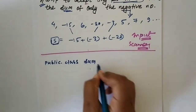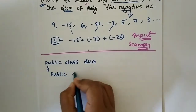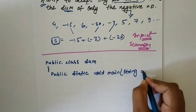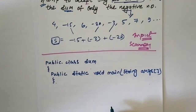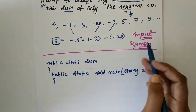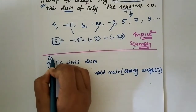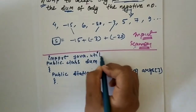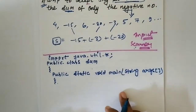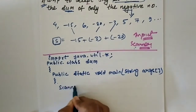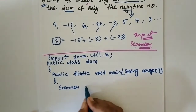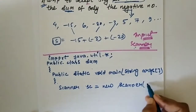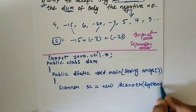Our class is public class Sum, then the main function: public static void main(String[] args). Inside, we need to take input from the user using Scanner class. We import the package: import java.util.*; Then we write: Scanner sc = new Scanner(System.in);